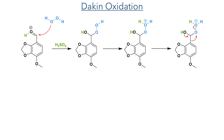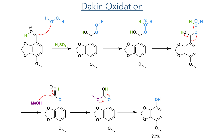The aldehyde was then subject to a Dakin oxidation. Reacting the molecule with hydrogen peroxide and sulfuric acid first protonates the carbonyl, allowing the peroxide to attack and form a hydroperoxy intermediate that is protonated and can then eliminate water, along with the formation of a carbon-oxygen double bond and migration of the aryl group — a mechanism very similar to the Baeyer-Villiger reaction. After this migration, the formyl group is attacked by methanol and ultimately hydrolyzed to produce the phenol in 92% yield.